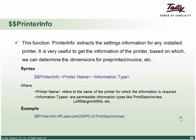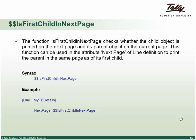An example: printer name is HP LaserJet 4250 PCL and I want the print size in inches. The function first child in next page checks whether the child object is printed on the next page while its parent is on the current page. Similar to do explosion fit — if the child is the first child object and the exploded part object is on the current page, it should not print separately; it should move to the next page. This function is specifically used at the next page attribute of line definition to print the parent in the same page as its first child.